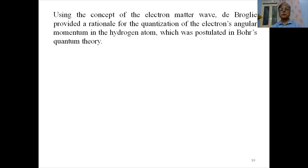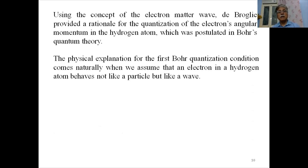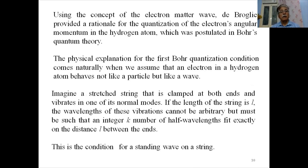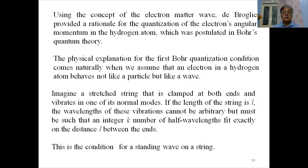The de Broglie concept provided a rational basis for the quantization of the electron's angular momentum in the hydrogen atom. The physical explanation for Bohr's first quantization condition comes naturally when we assume that an electron in a hydrogen atom behaves not like a particle but like a wave. Imagine a stretched string clamped at both ends vibrating in one of its normal modes. If the length of the string is L, the wavelength of these vibrations cannot be arbitrary — not all wavelengths will fit into that length L.